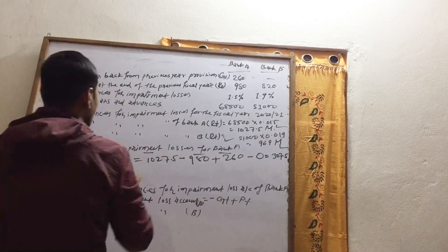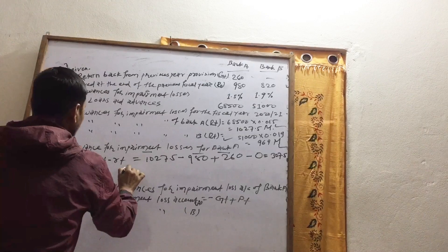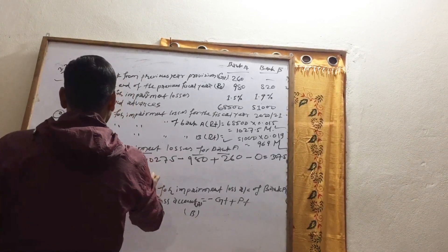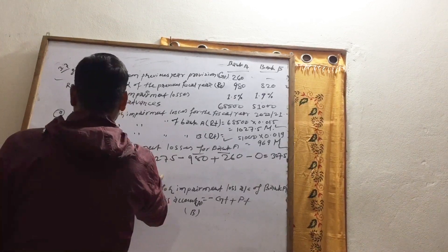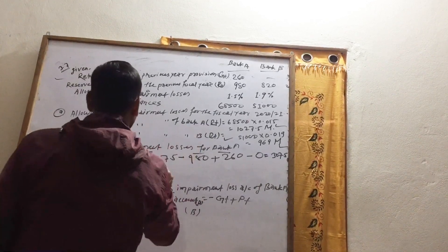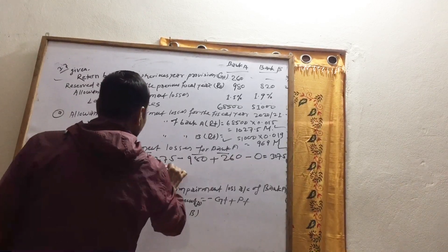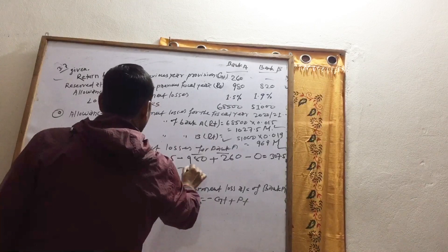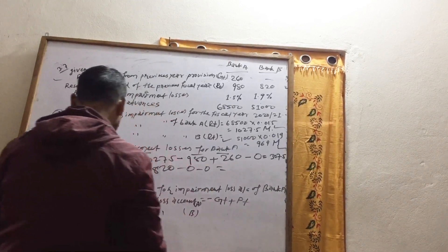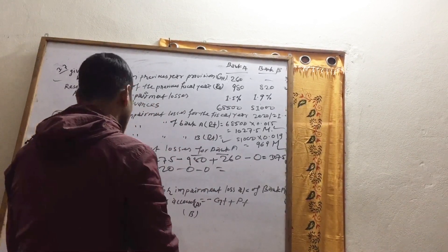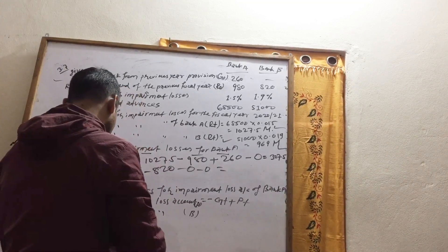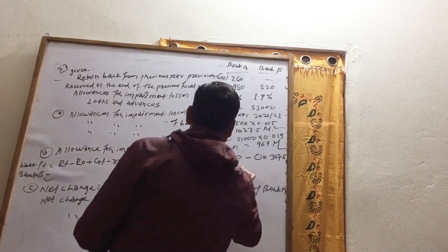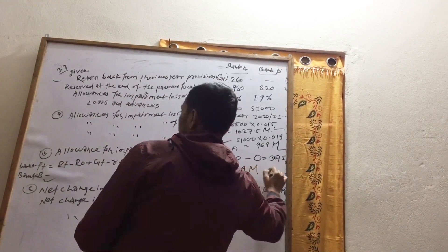For Bank B: RT equals 969. So RT minus RO equals 969 minus 820, equals 149. That gives 149 million for Bank B's share.